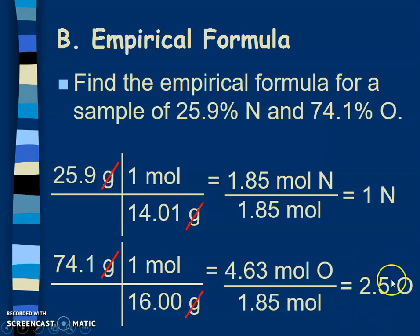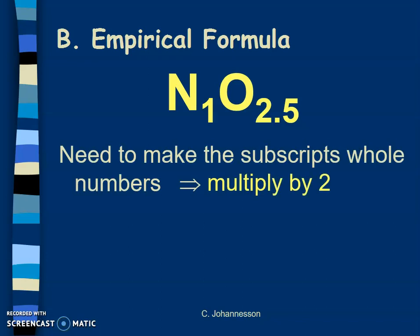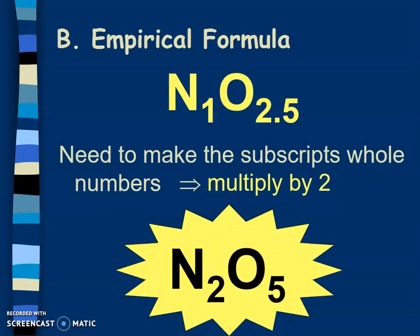This is one of those examples where you don't get a whole number. If I took this at face value, that means my empirical formula would be N1O2.5, but we can't have half of an oxygen. So how do we make 2.5 a whole number? You multiply by 2. So 1 times 2 is 2, and 2.5 times 2 becomes 5. So you have N2O5, and this is your empirical formula. Notice that these cannot be reduced - 2 and 5 do not have a number they can be divided by to get another whole number. This is the lowest it can go, and we have just calculated the empirical formula.